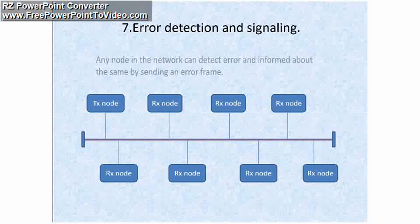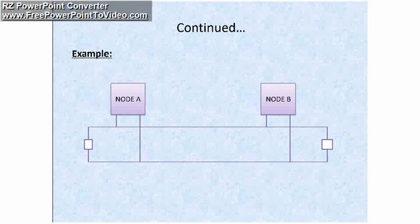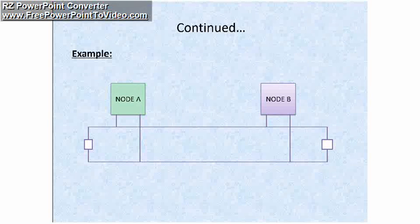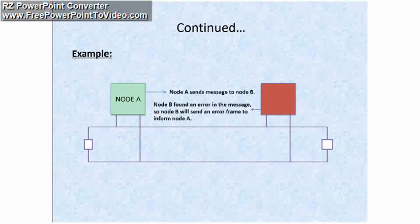We will now see this with an animated example. Node A is the transmitting node and broadcasts its message over the CAN network. Node A sends a message to Node B. Node B is going to reply to Node A — Node B found an error in the message.